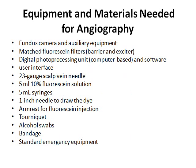The equipment and materials needed for angiography are as follows: fundus camera, matched fluorescein filters, a digital processing unit and a user interface, 23-gauge scalp vein needle, 5 ml of 10% fluorescein solution, 5 ml syringes, 1-inch needle to draw the dye, armrest for fluorescein injection, tourniquets, alcohol swab, bandage, and standard emergency equipment.